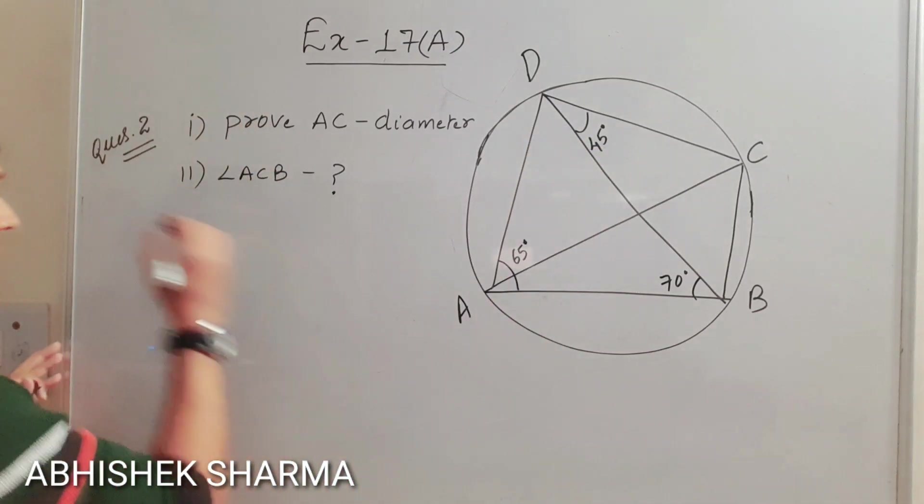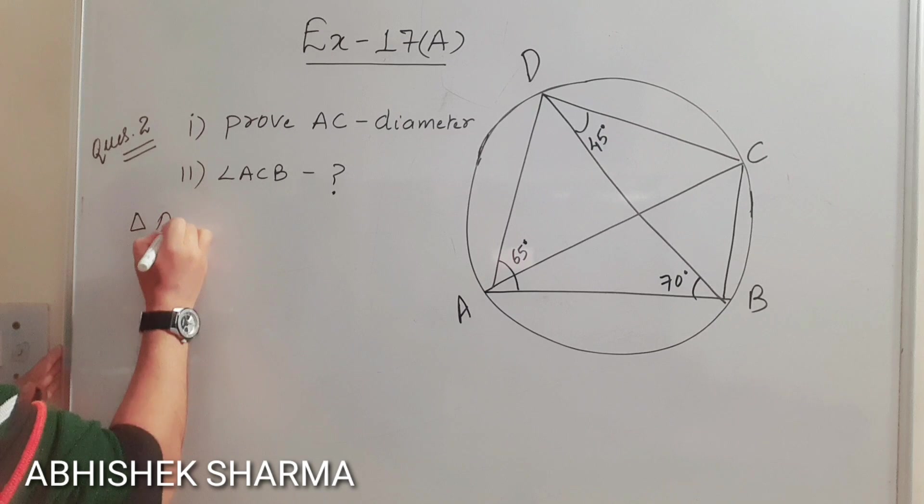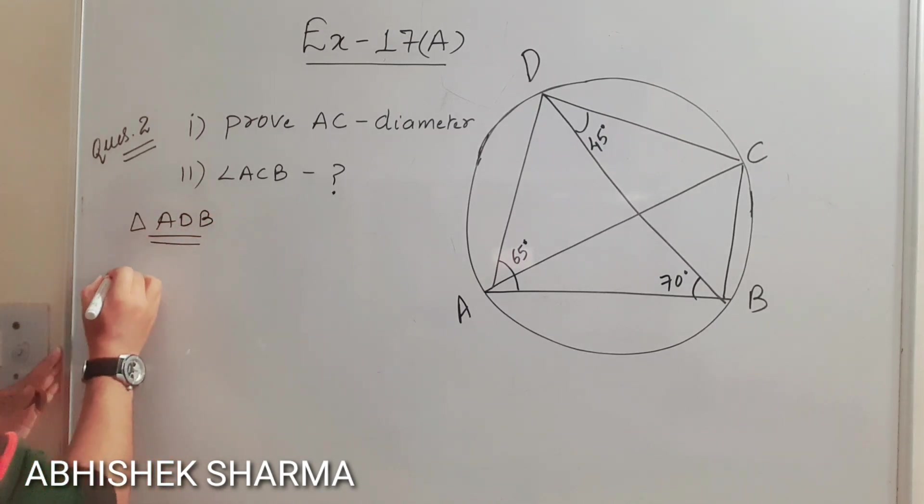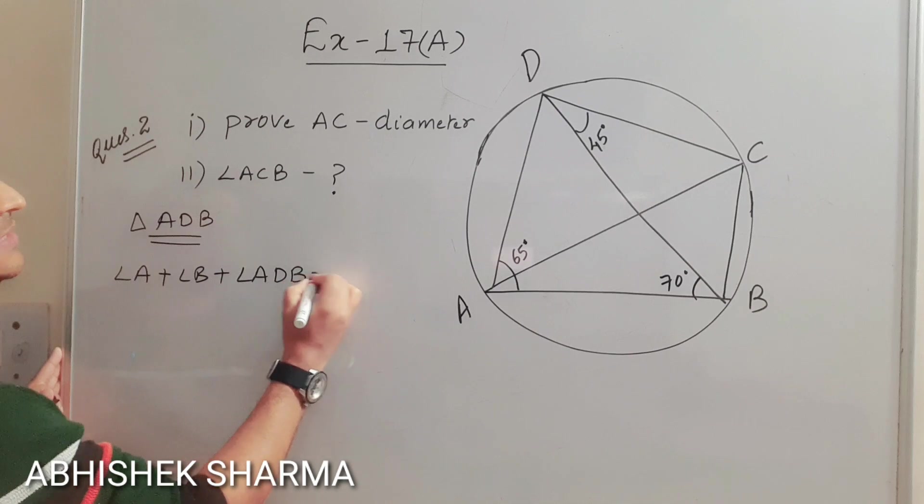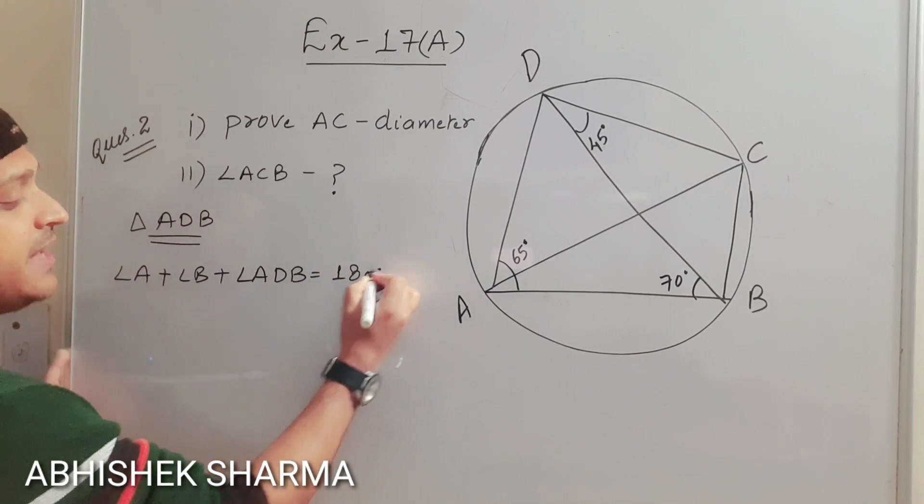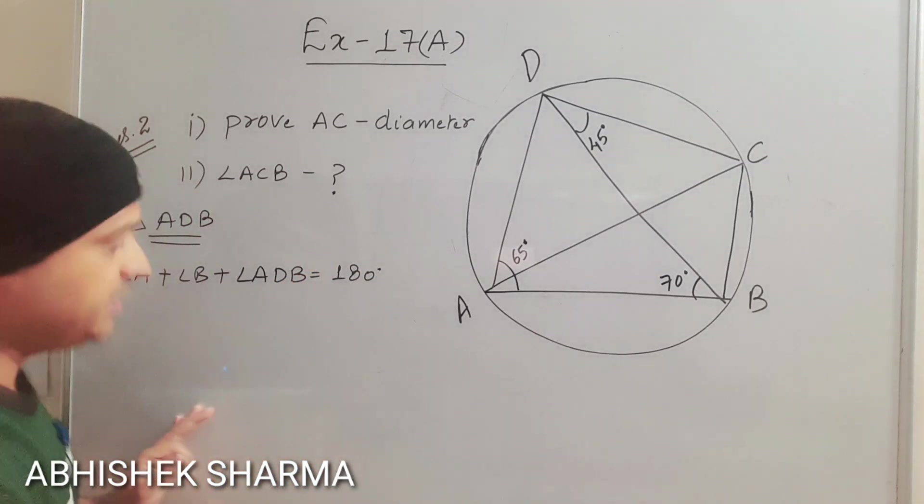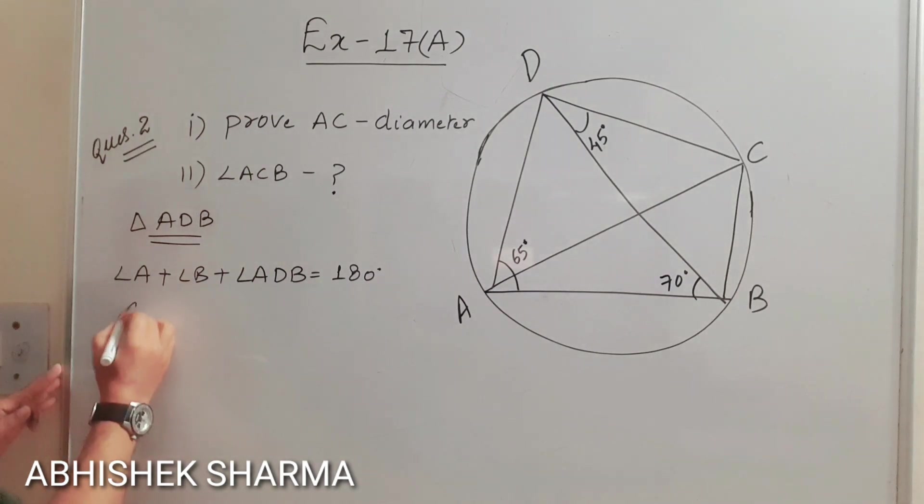So let us come here angle ADB, triangle ADB. What I can write? Angle A plus angle B plus angle ADB equals 180. This is angle sum property. Now angle A, what is angle A? 65. What is angle B? 70.